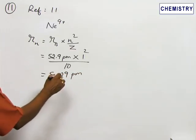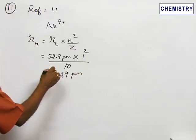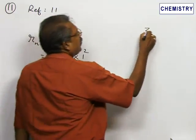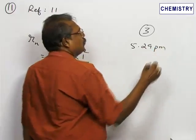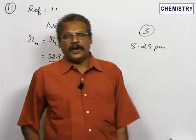5.29 pm is given by option 3. Therefore, select option 3: 5.29 pm.